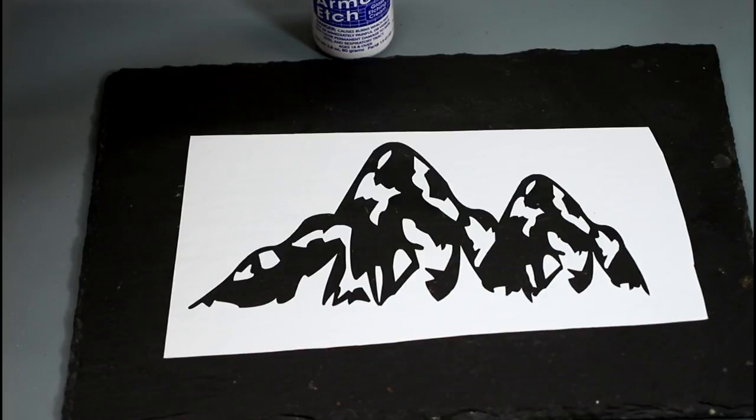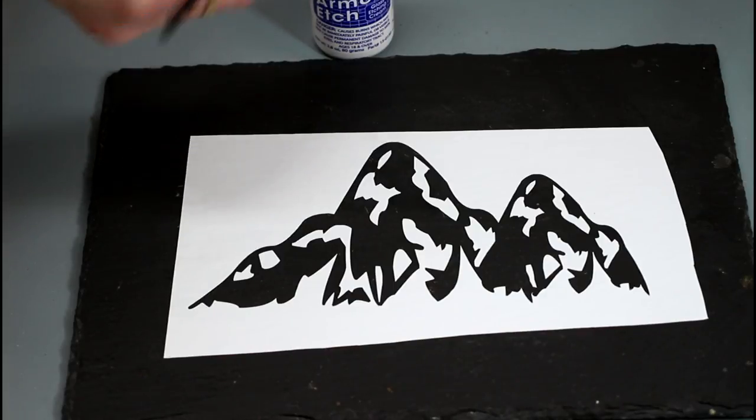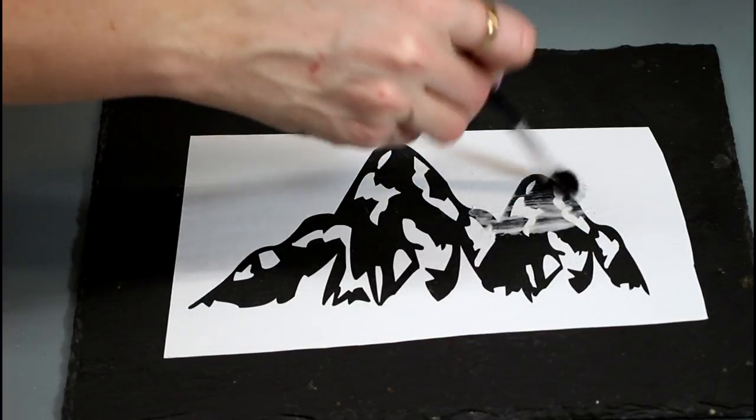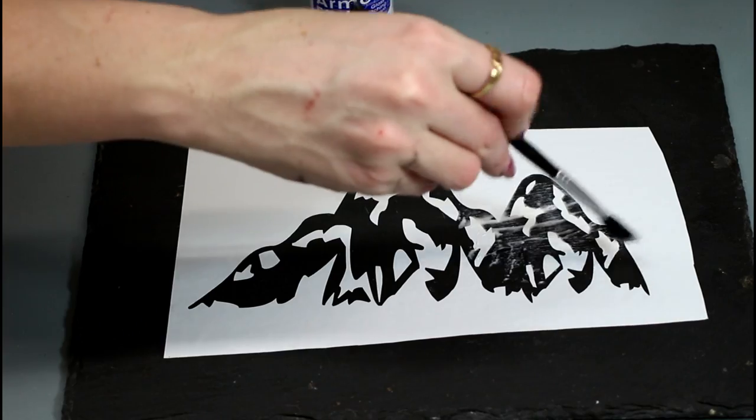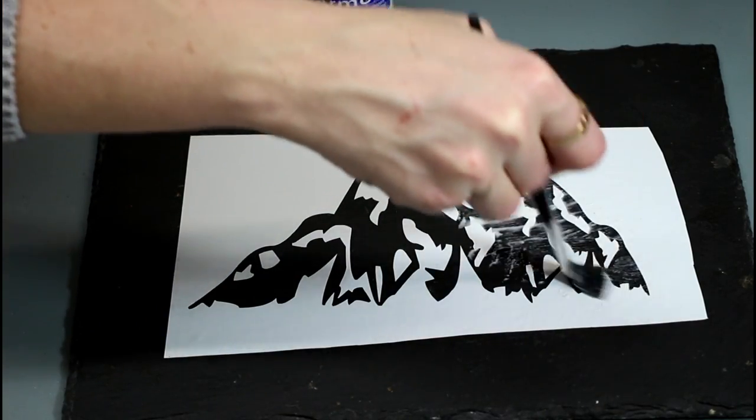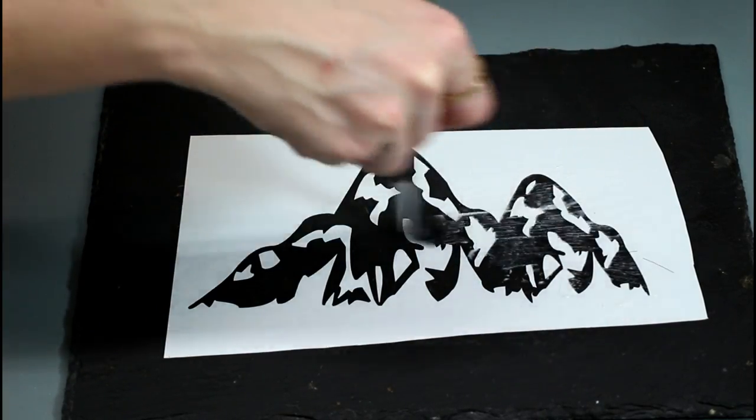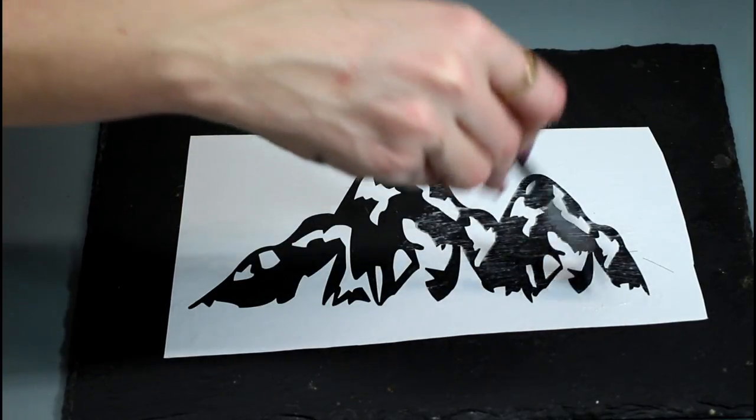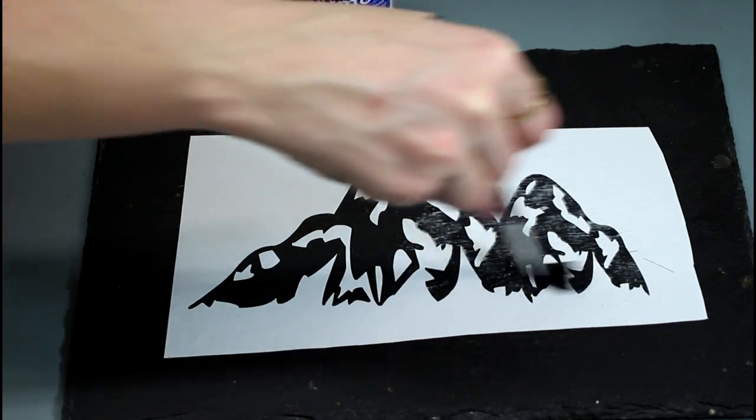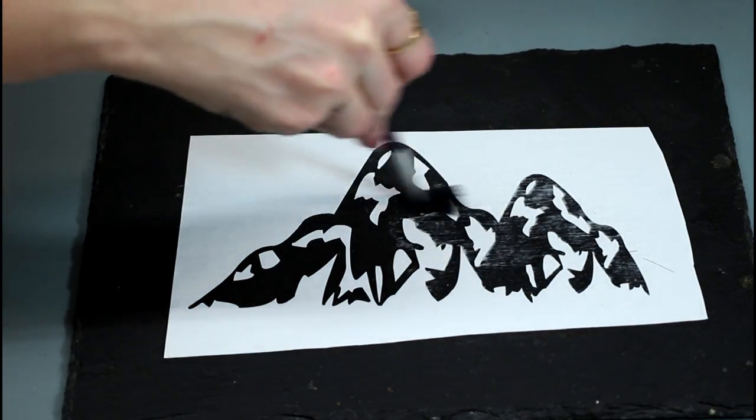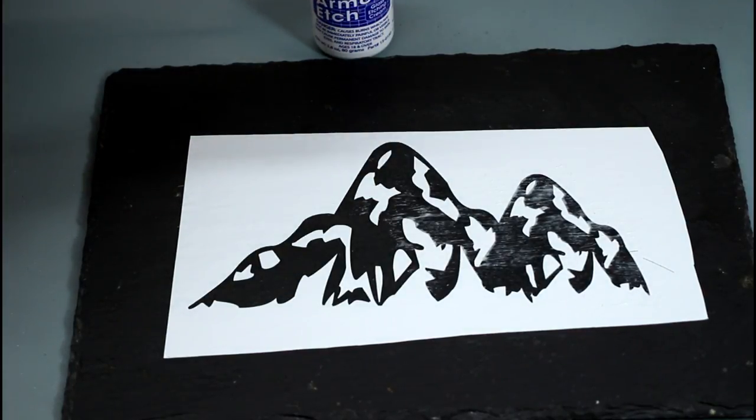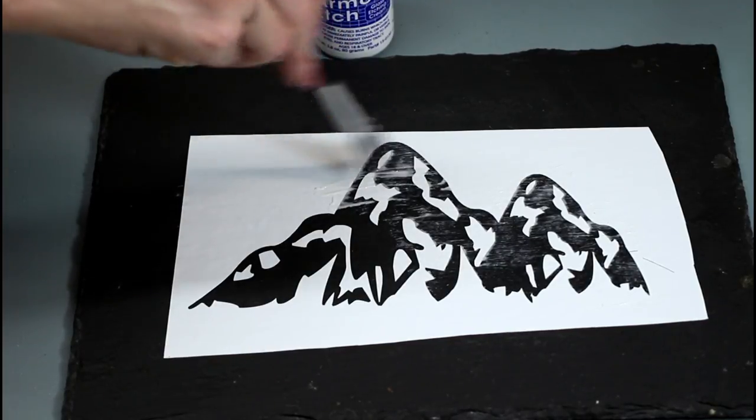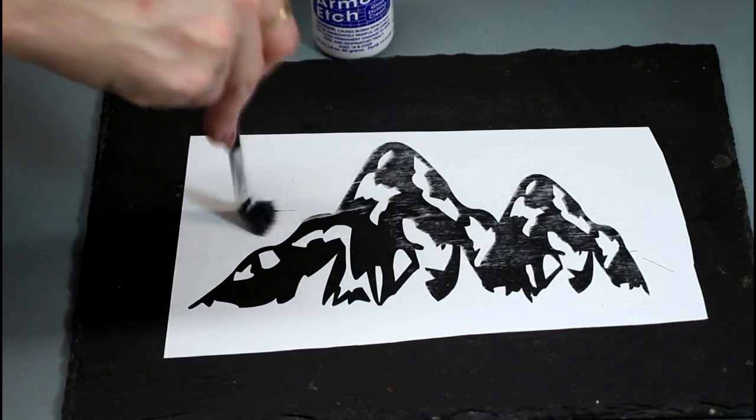So we're just going to go in with our brush and dip it into our Armor Etch, and then you want to apply a nice thin even layer all across your design. And I always go in with a nice thin layer first. This is the process that I find works for me. I know other people do it slightly differently, but this has always worked well for me. So just a nice thin even layer, and you want it to be as even as you can possibly get because you want the etch to kind of be that nice even look across. You don't want heavy bits and light bits. You want a nice etch all the way across.